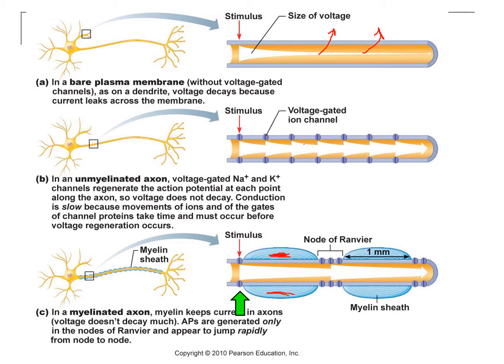Sodium comes into the cell and diffuses down to the next node of Ranvier very quickly. At the node of Ranvier, this mimics an unmyelinated axon because the nodes of Ranvier are themselves unmyelinated. So the spread of sodium ions happens very fast underneath the myelinating cells — Schwann cells in the peripheral nervous system, oligodendrocytes in the central nervous system. The diffusion happens very fast underneath the myelinating cells and slower at the nodes of Ranvier, which is why the signal appears to skip from node to node.